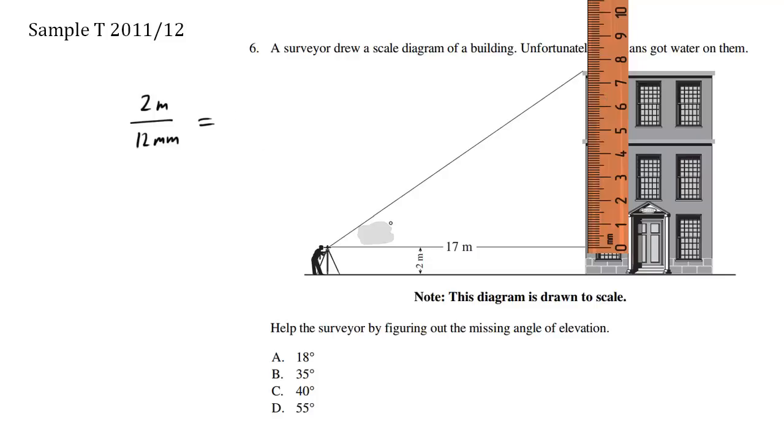So what we have now is we're interested in solving how many actual meters this height is of this right angle triangle. So it's going to be x meters, that's what we're trying to solve, over 75 millimeters. Because from here to here, this is 75 millimeters. And because we know that we have a ratio here, we should be able to solve for x.